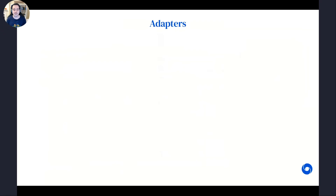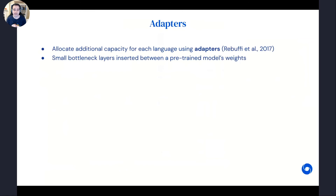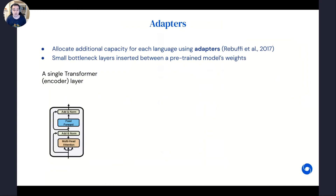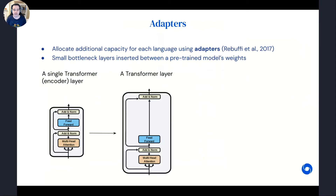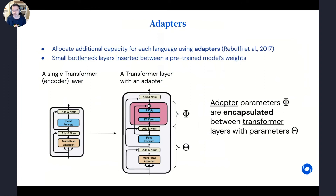The key methodology I want to highlight is known as adapters — small bottleneck layers inserted between pre-trained model layers. In the context of a standard transformer layer, which consists of a multi-head attention layer coupled with a feed-forward network sandwiched between two layer normalizations, the adapter layer is typically placed just before the final layer normalization. This adapter layer simply consists of one feed-forward down-projection, one feed-forward up-projection, coupled with a residual connection toward the input.